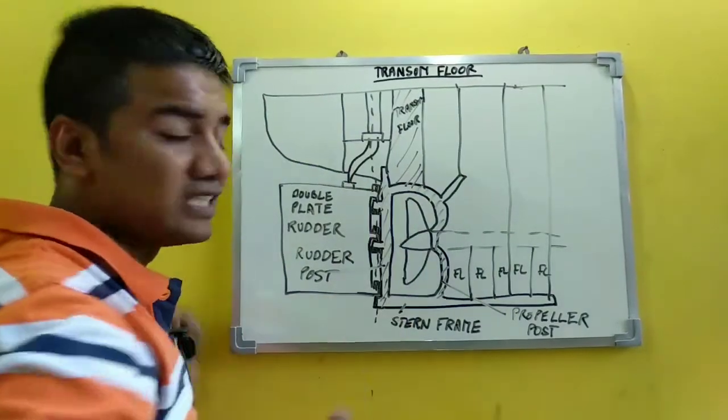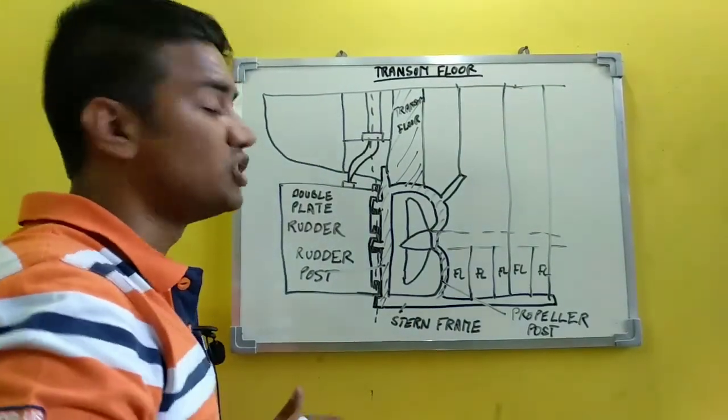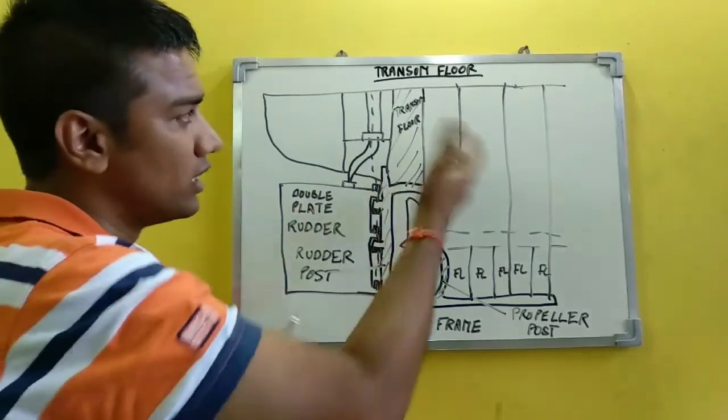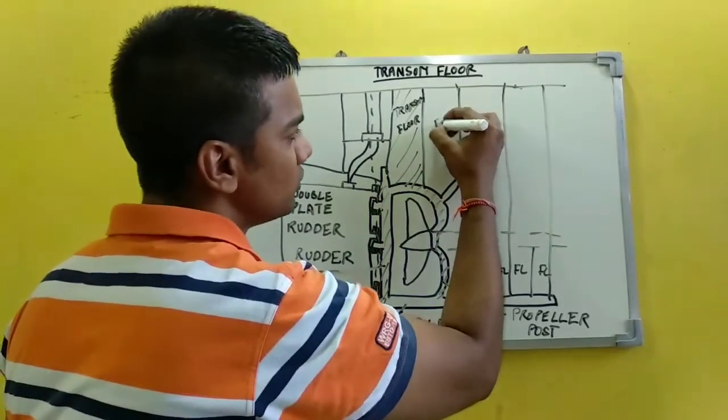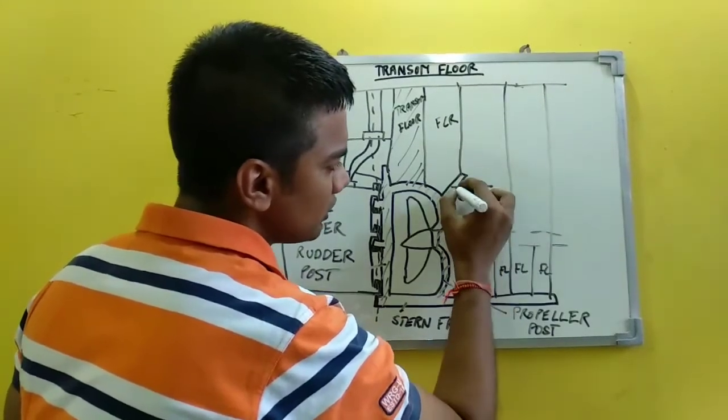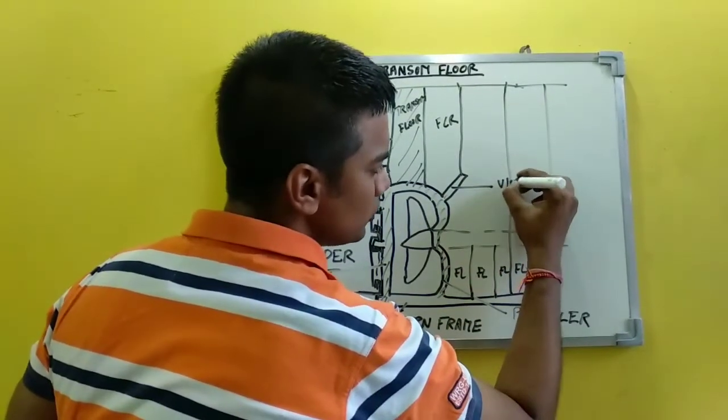Now this transom flow is much heavier in strength compared to the adjacent flows, compared to this flow over here. This structure what you are seeing is the vibration post.